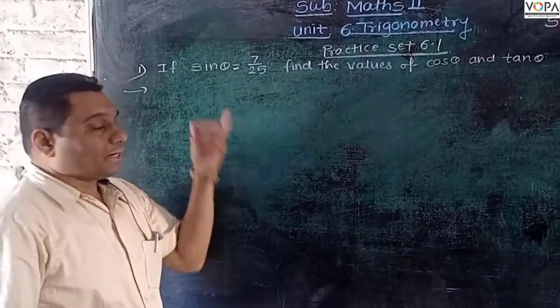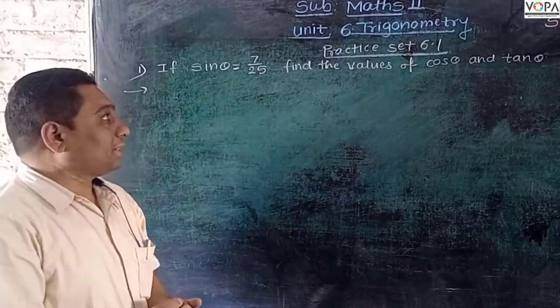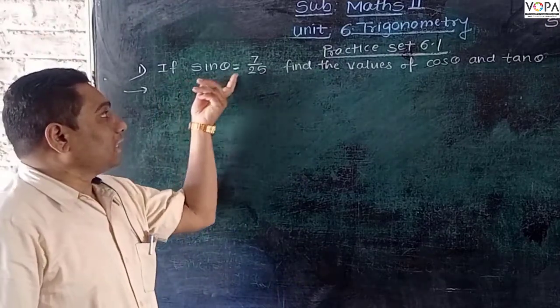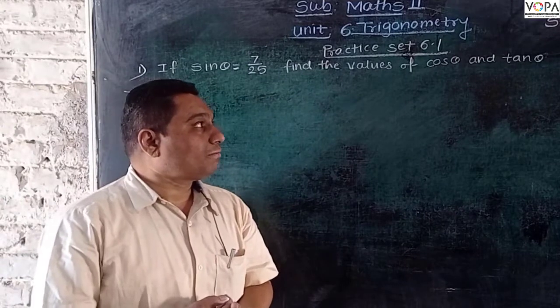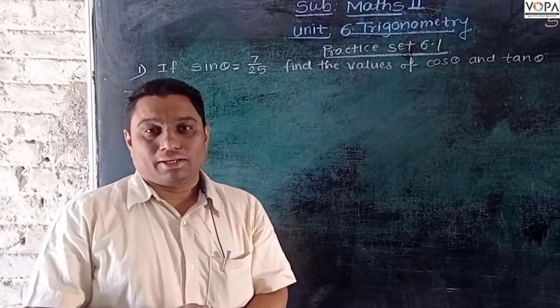So look at the first problem from this practice set. Here the value of sin θ = 7/25 is given and we have to find out the values of cos θ and tan θ.